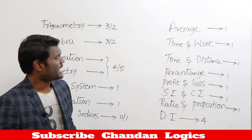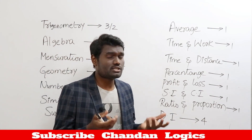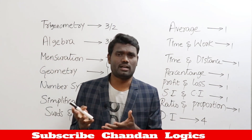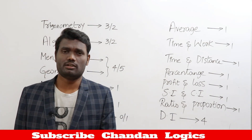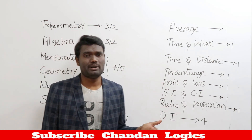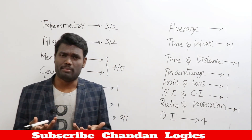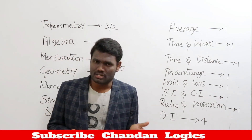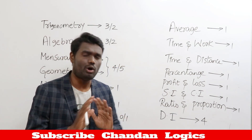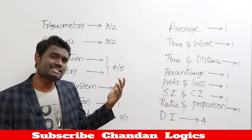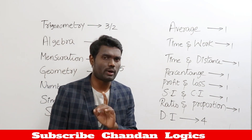Looking at arithmetic, from some topics you get questions and sometimes there are zero marks from a topic — it depends. Generally from averages you get one question, from time and work one question — which covers chain rule and pipes and cisterns. From time and distance you get one question — which covers trains, boats and streams. But for mains the weightage may be different; for prelims expect only one question each from time and work and time and distance.